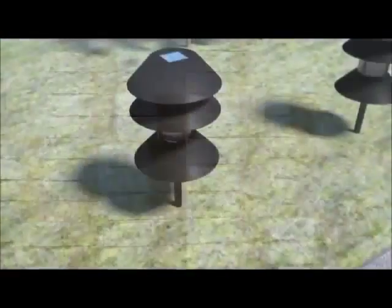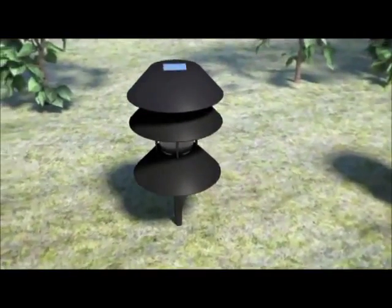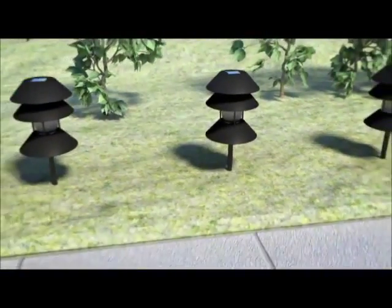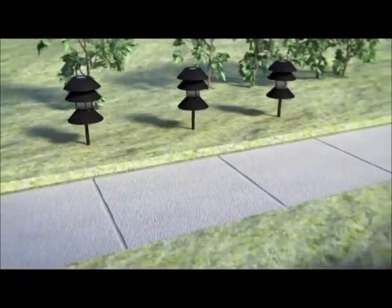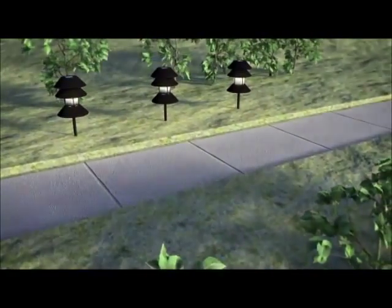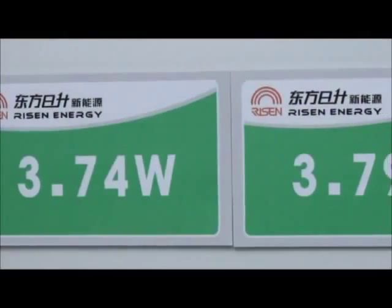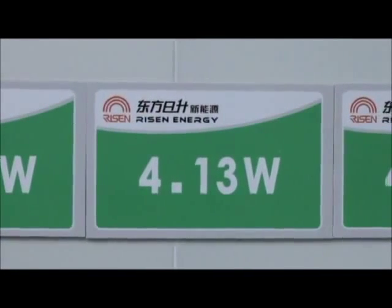Besides solar cells and modules, Ryzen Energy also produces solar light products and small solar systems. Most defective or inferior cells will be reused later after a series of tests.